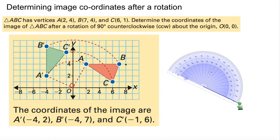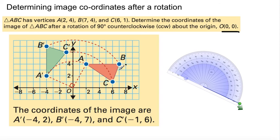Triangle ABC has vertices A (2, 4), B (7, 4), and C (6, 1). Determine the coordinates of the image of triangle ABC after a rotation of 90 degrees counterclockwise about the origin. So where are you rotating it around? The origin — (0, 0) — right there. Which direction? Counterclockwise — opposite of clockwise.